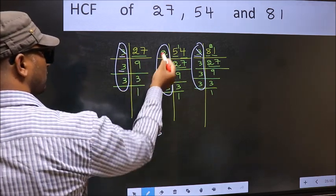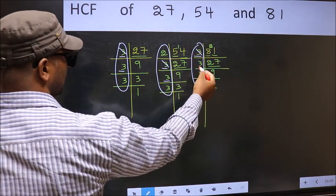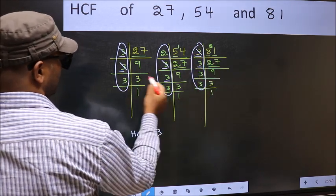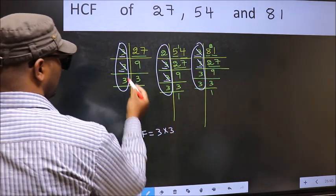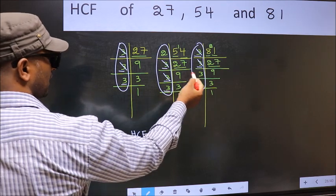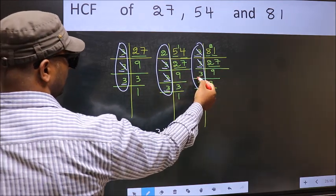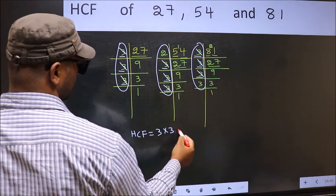Next number 3. Do we have 3 here? Yes. Go to the next place. Do we have 3 here? Yes. So cut 3 right here. Next number 3. Do we have 3 here? Yes. Go to the next place. Do we have 3 here? Yes. So cut 3 right here.